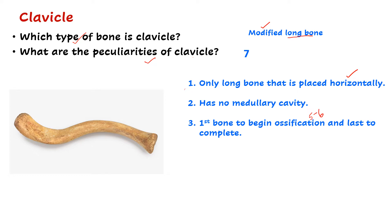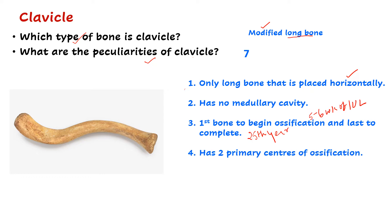The clavicle is also the last bone to complete ossification, which occurs around the 25th year of life. The fourth point is it has two primary centers of ossification, whereas all other long bones have just one primary center. The fifth point is it is subcutaneous throughout - you can feel it from its medial end to lateral end.